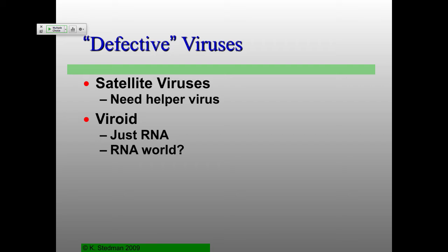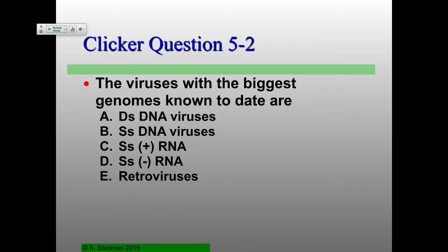So a little break — take a breather and pull out your clickers. Viruses with the largest genome known to date are: double-stranded DNA viruses, single-stranded DNA viruses, single-stranded RNA viruses positive-strand, single-stranded RNA negative-strand, or retrovirus. Please feel free to talk about this.